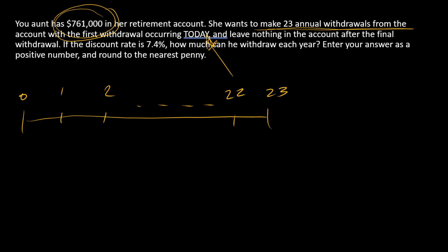So here's the timeline. We're going to have this series of payments. It looks like this, and there's 23 of these, starting at time zero and going through time 22.